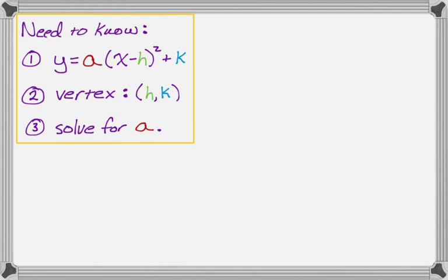The second step is going to be to simplify some things, then we're going to substitute, then we're going to solve for a, and then we'll write the equation. So let's take a look at an example. We want to find the equation of a quadratic given that the vertex is 5 negative 3, and it passes through the point 7, 1.